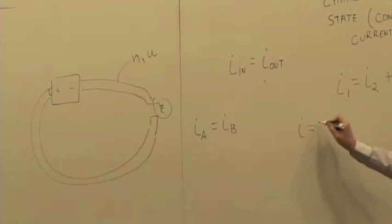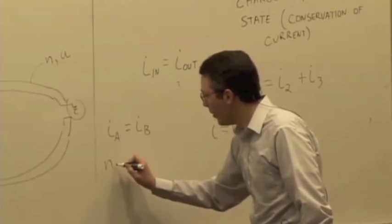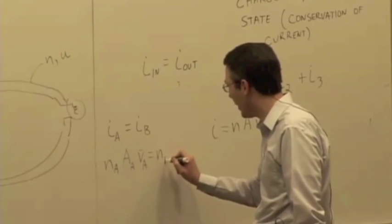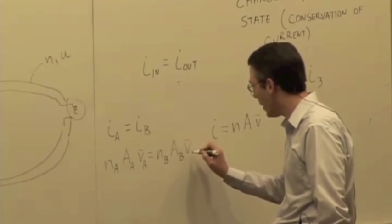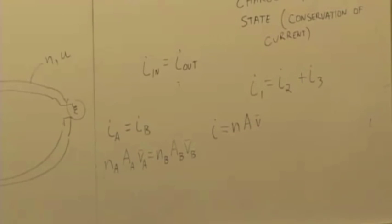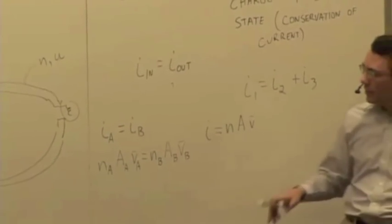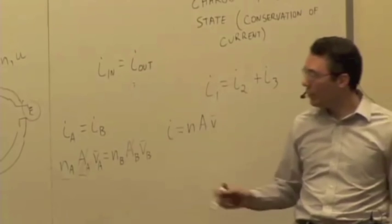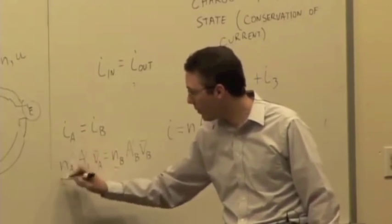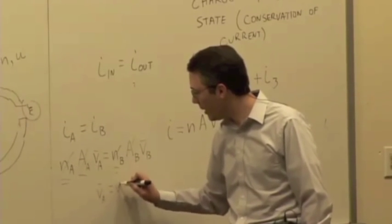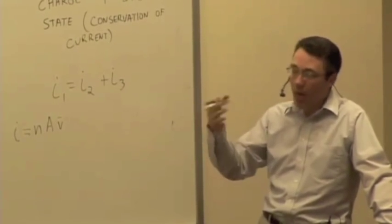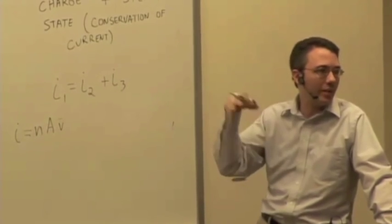I also know that I is equal to NAV. So plugging this in: the electron density at A times the area of the wire at A times the velocity of the electrons at A equals the electron density at B times the area at B times the drift speed at B. The area is the same — it's the same thickness of wire — so they cancel out. And N is the same because it's the same material, copper for example. So the drift speed in this case turns out to be the same as well. If you have the same wire thickness and the same number of electrons per unit volume, then for the currents to be equal, they must be moving at the same speed.